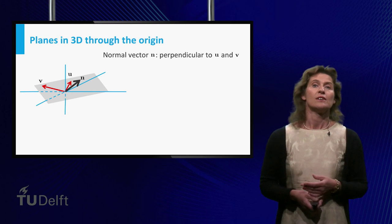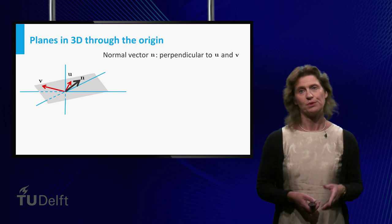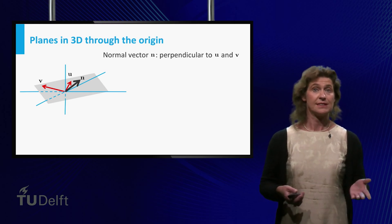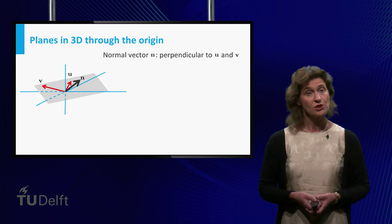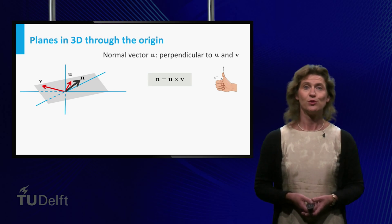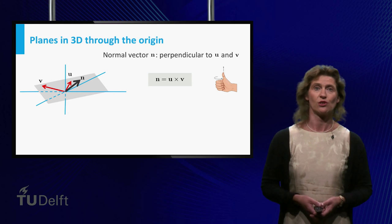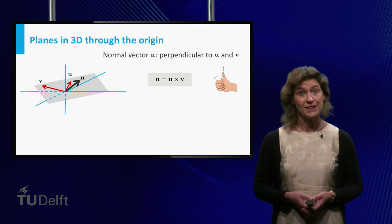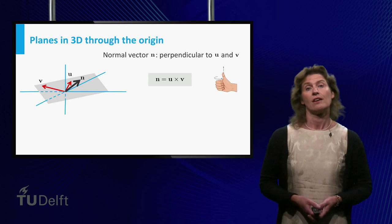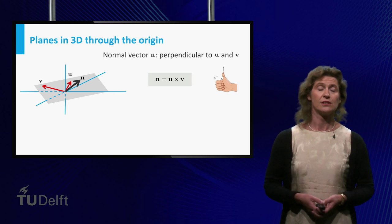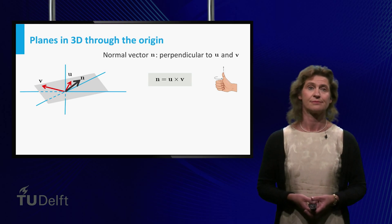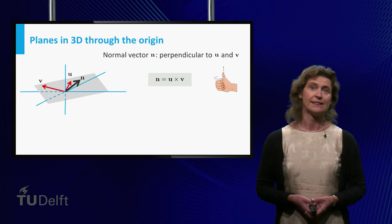So we are looking for a vector perpendicular to two given vectors. But this is exactly what we did in the lesson on cross-products. If you take n to be the cross-product of the two given vectors, it is orthogonal to these vectors by definition. Fine, you might say, we have a normal vector, but how is this going to help me to find a nice equation for the plane?